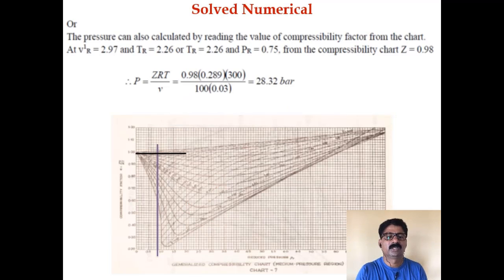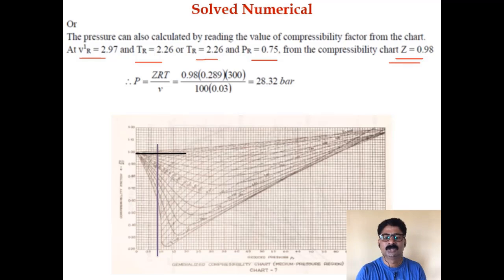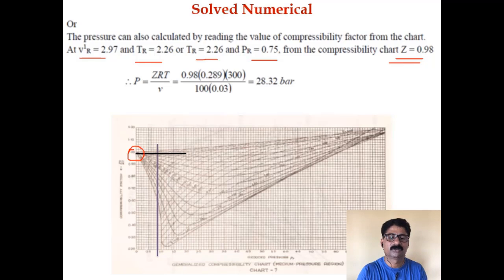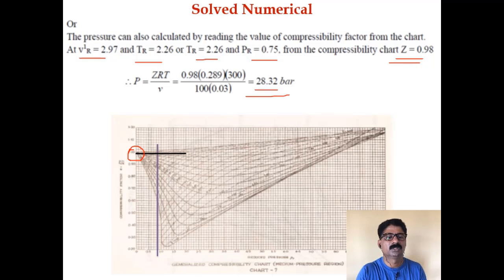The pressure can also be calculated using the compressibility factor Z from the chart. With V̄r' = 2.97 and TR = 2.26 (or PR = 0.75), Z is found as 0.98. Using P = ZRT/V, the pressure is 28.32 bar. So there are two ways to use the compressibility chart: find PR and multiply by Pc, or find Z and use P = ZRT.